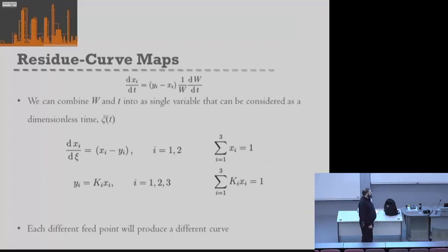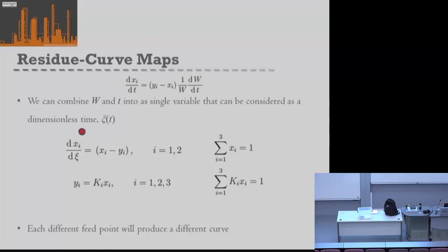Now we do a little mathematical trick. Instead of working in time — because we're not actually trying to work out how long the system takes to distill — what we're interested in is how the composition changes in our still. That's what our residue curve is. So we define a dimensionless time as a function of the mass of our still with time. Substituting this into our derived mass balance, we get that the rate of change of x with dimensionless time equals simply the difference between our vapour and liquid compositions, y_i minus x_i.